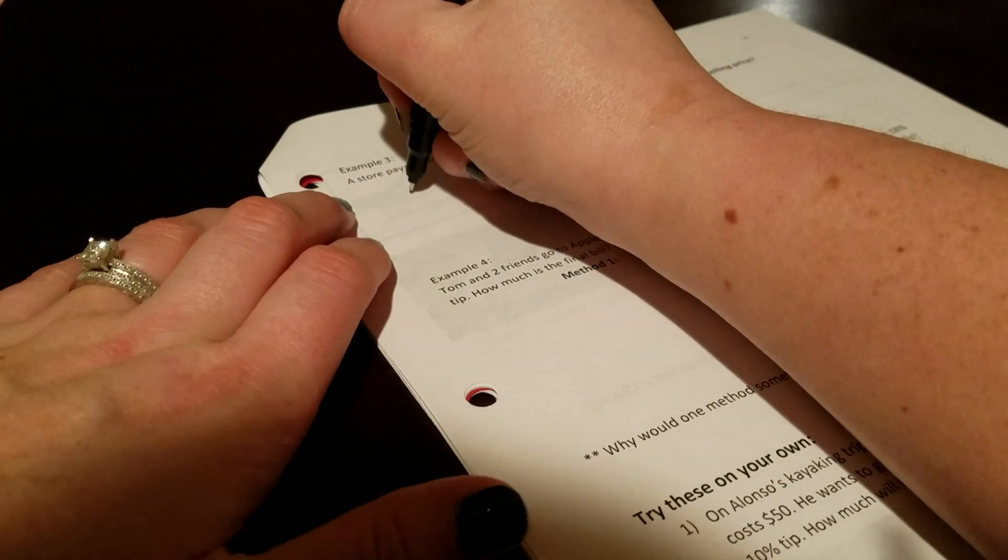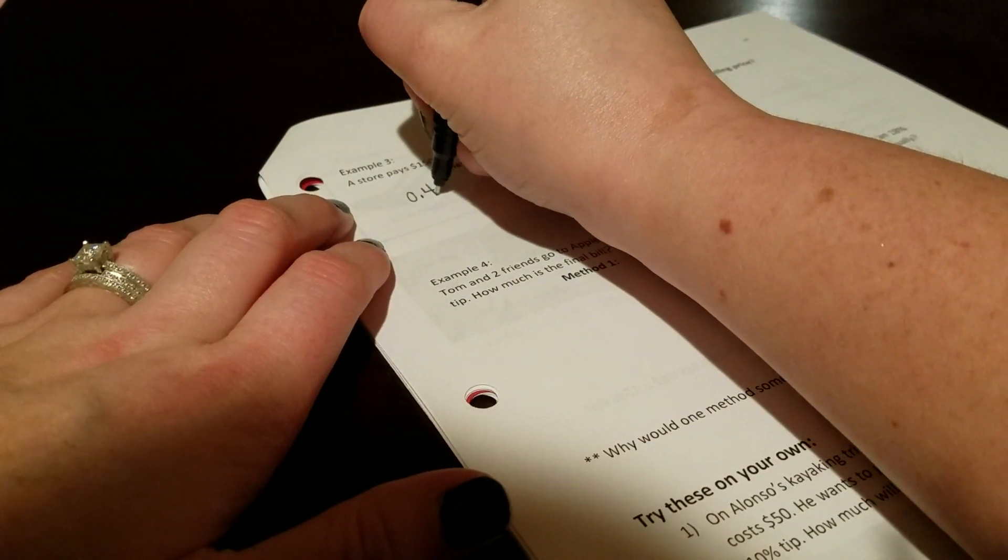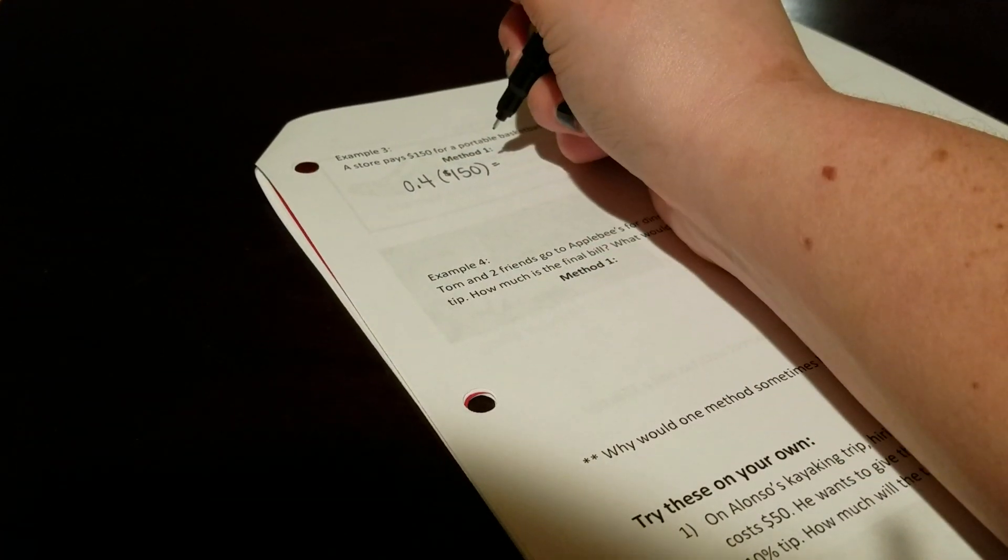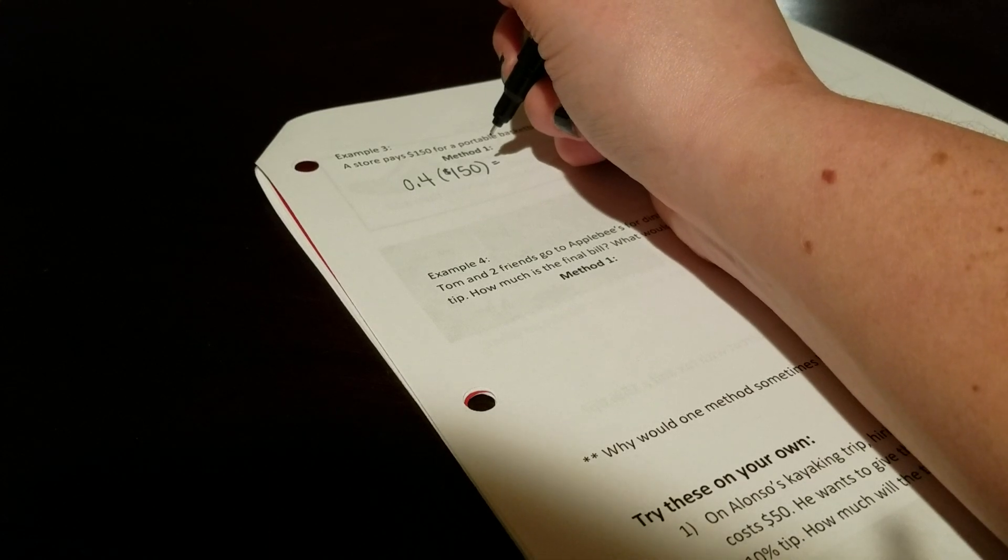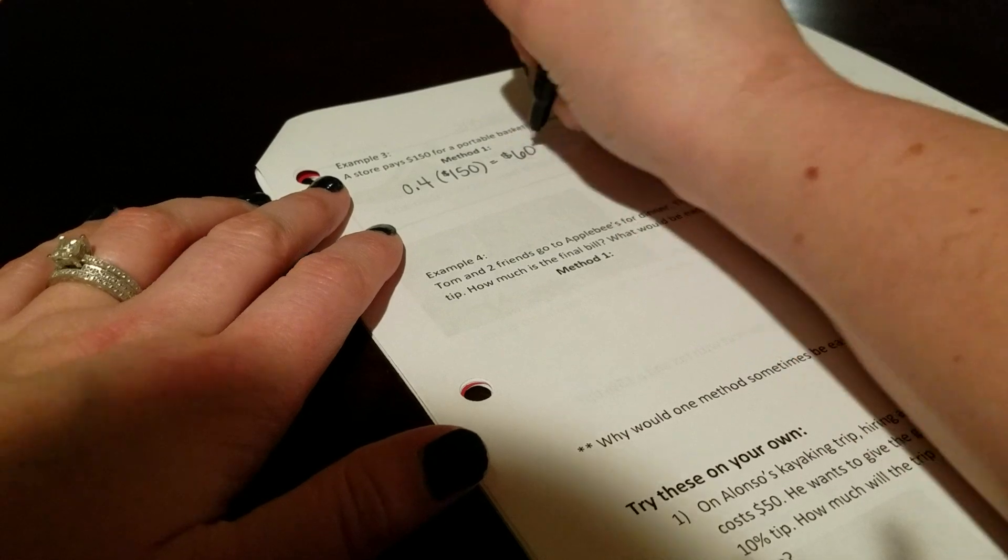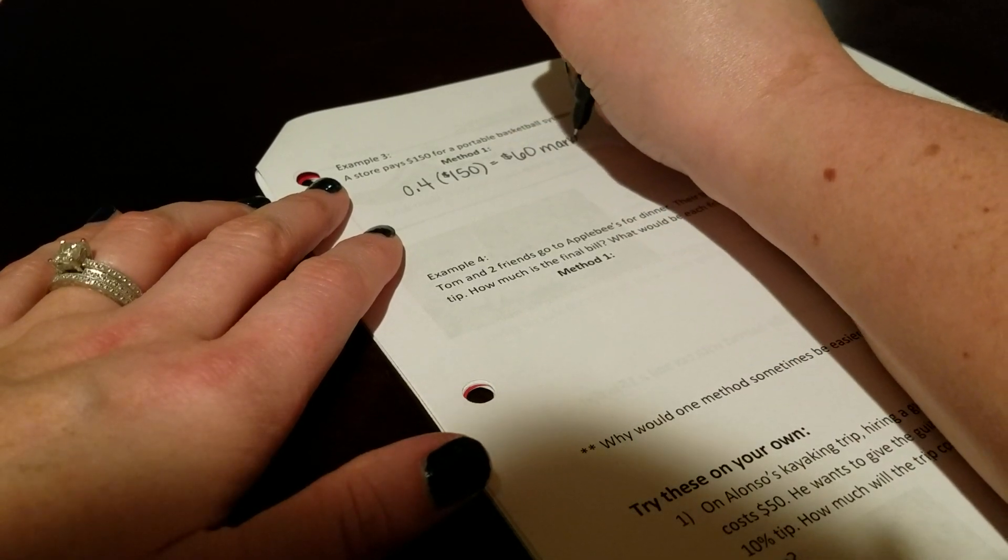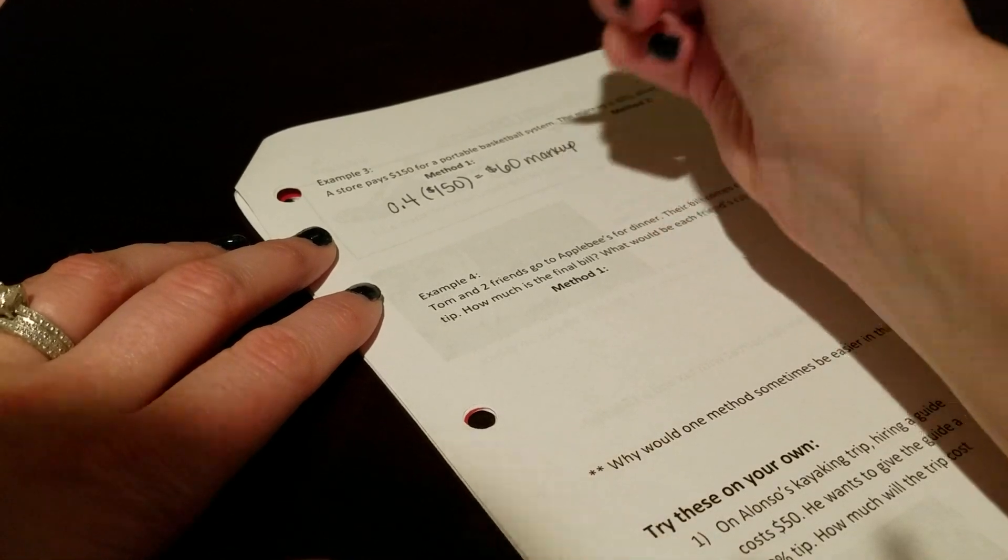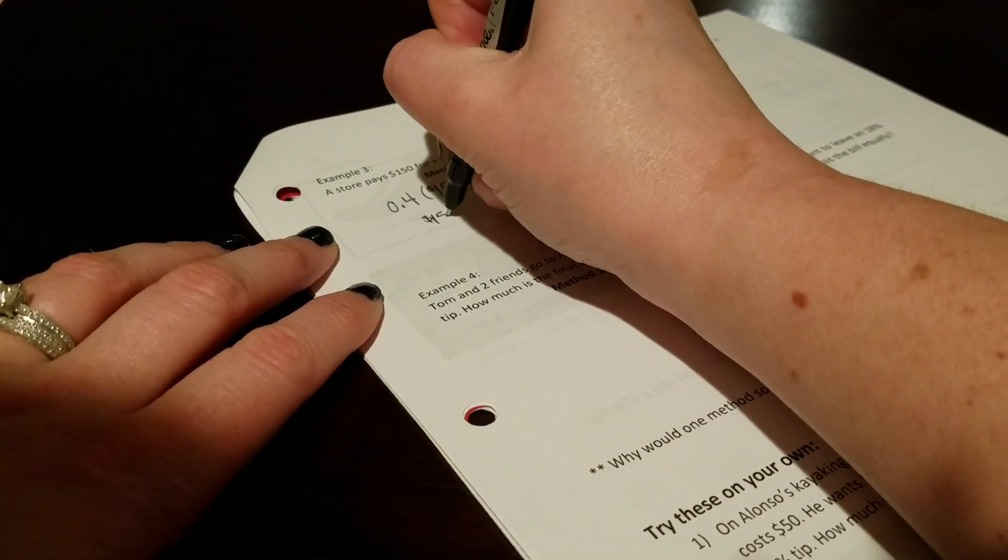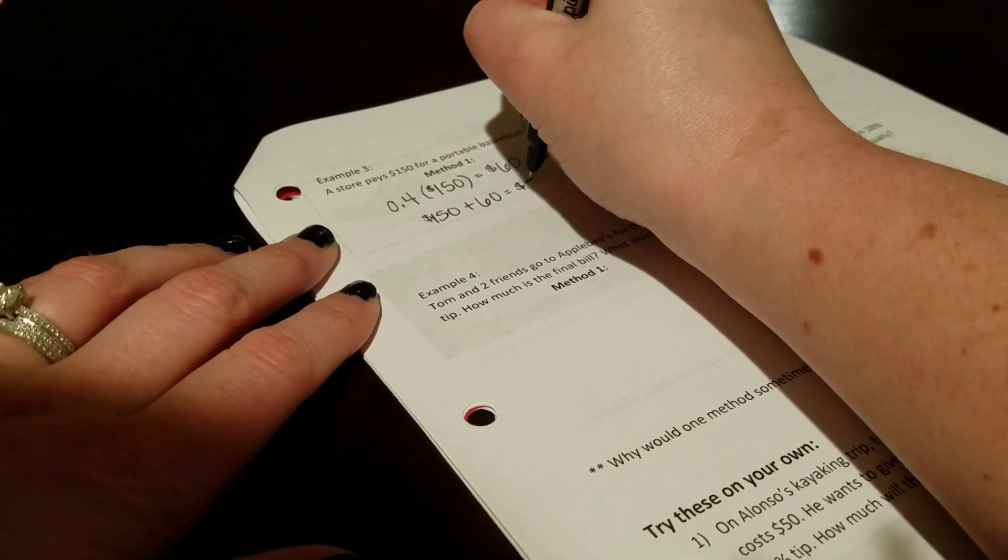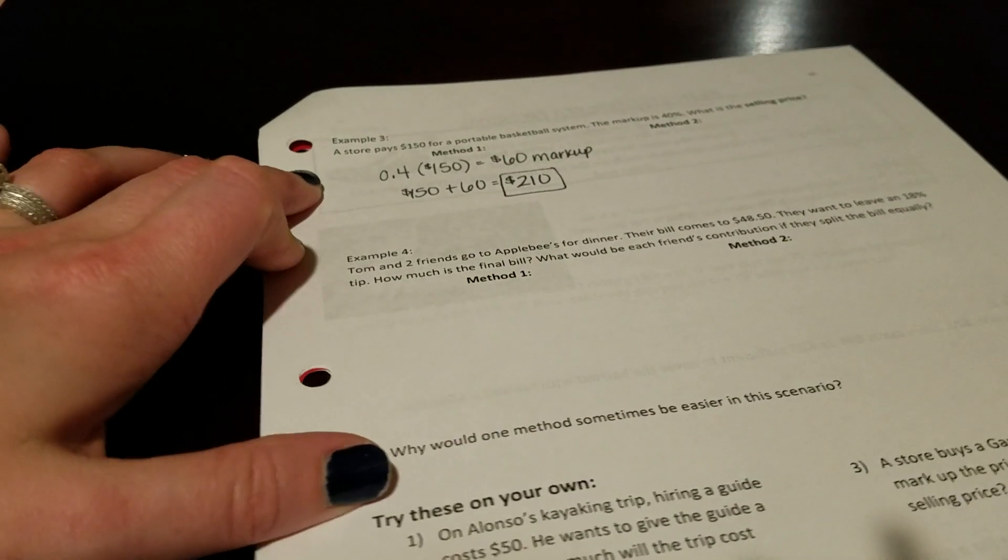So using method one, we're going to do 40% or 0.4 times $150. And that will give us $60. I'm going to call this markup. Markup reminds you that you're going to be going up with your price. So you have your $150 basketball system plus your $60 markup. Your selling cost would be $210.